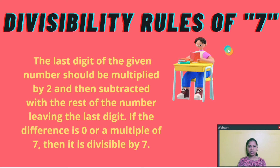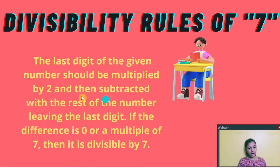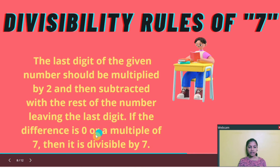Divisibility rules of 7. The last digit of the given number should be multiplied by 2 and then subtracted from the rest of the number, leaving the last digit. If the difference is 0 or a multiple of 7, then it is divisible by 7.